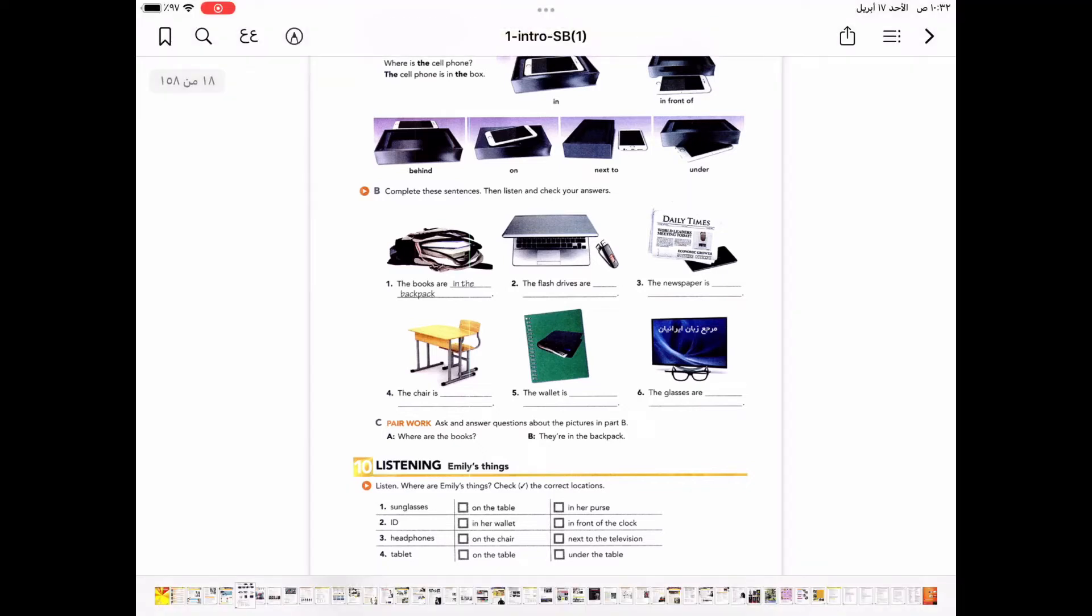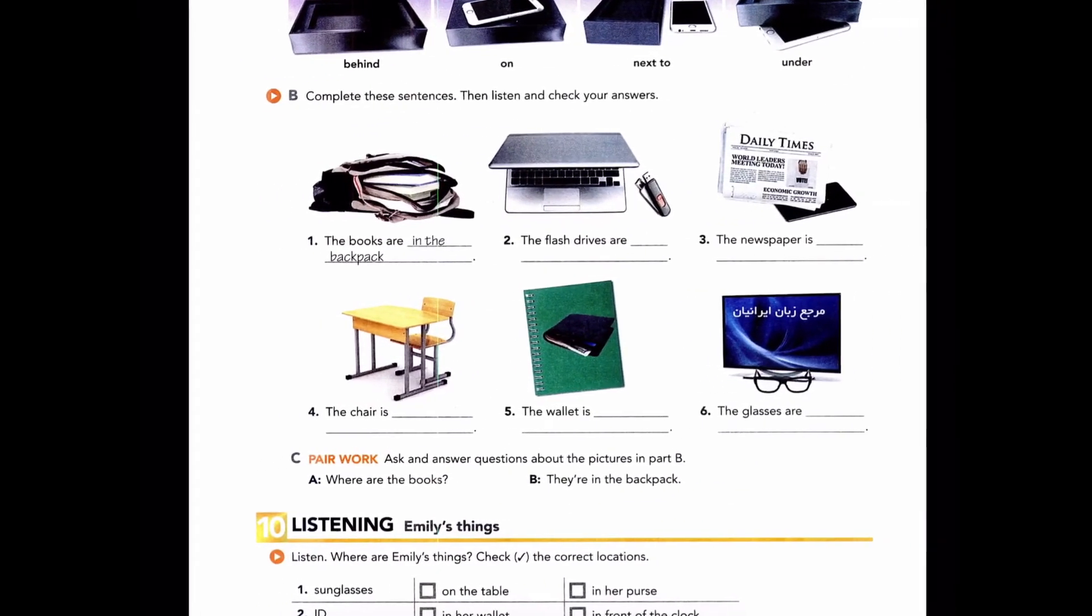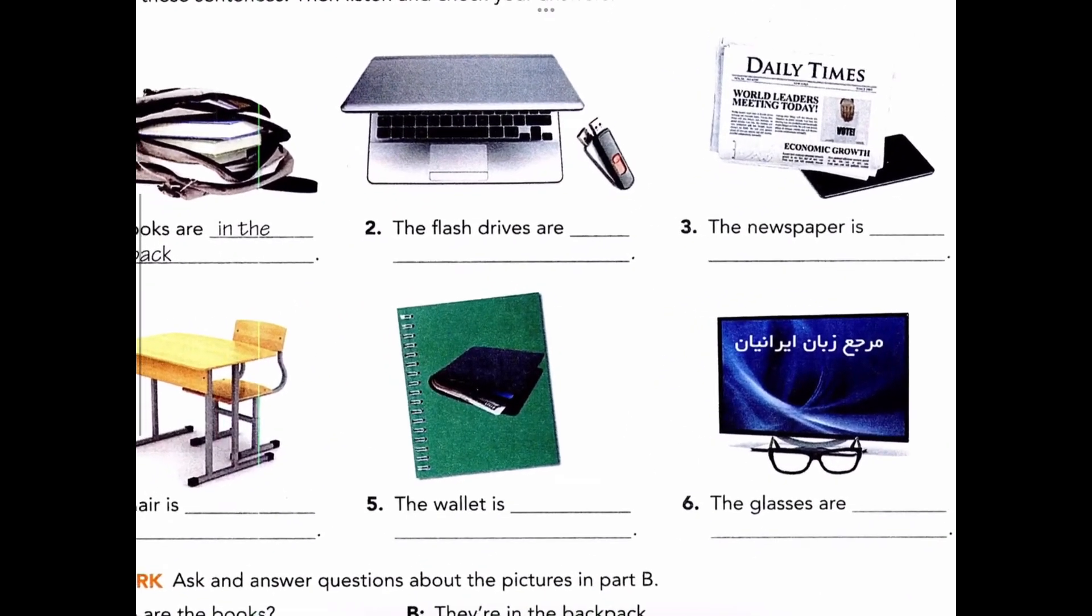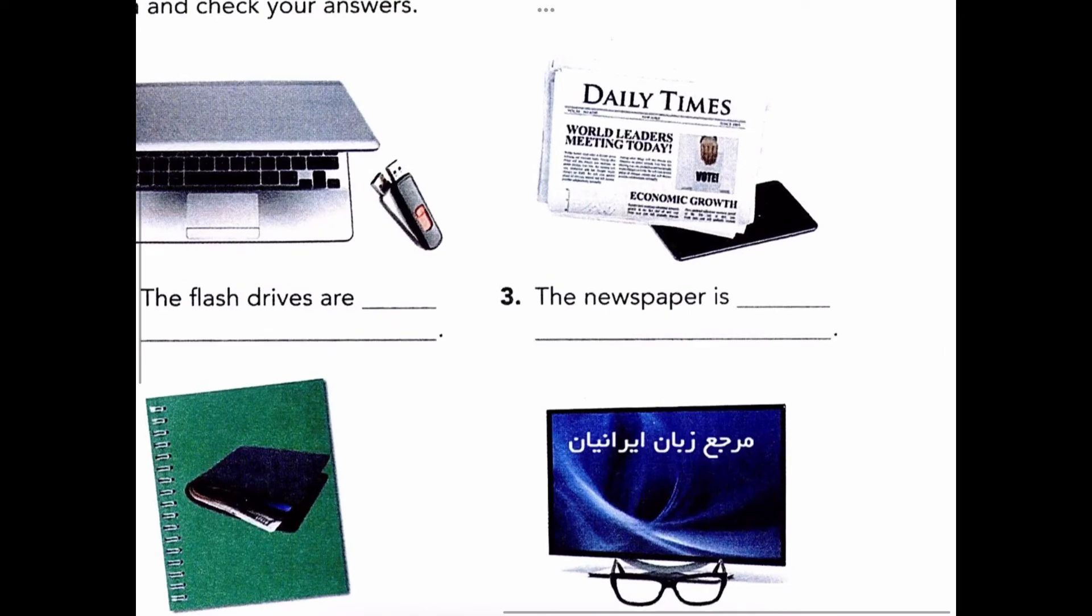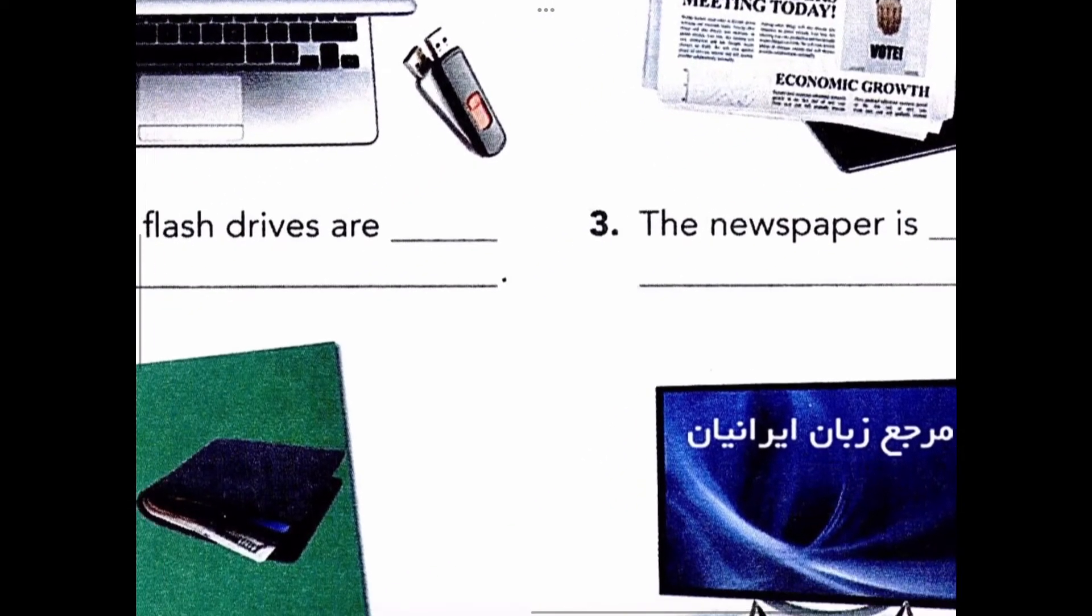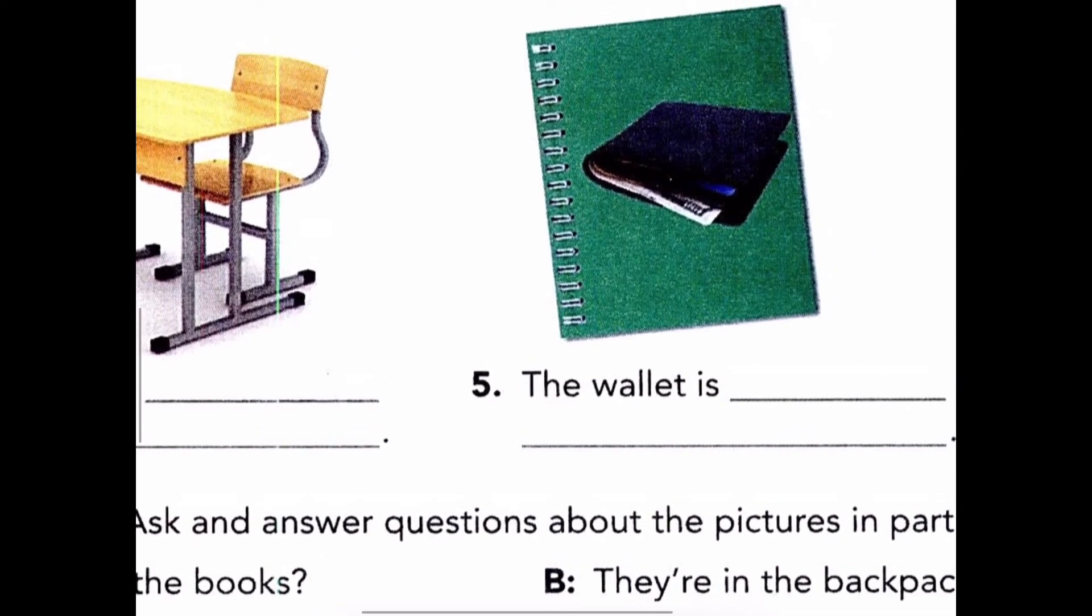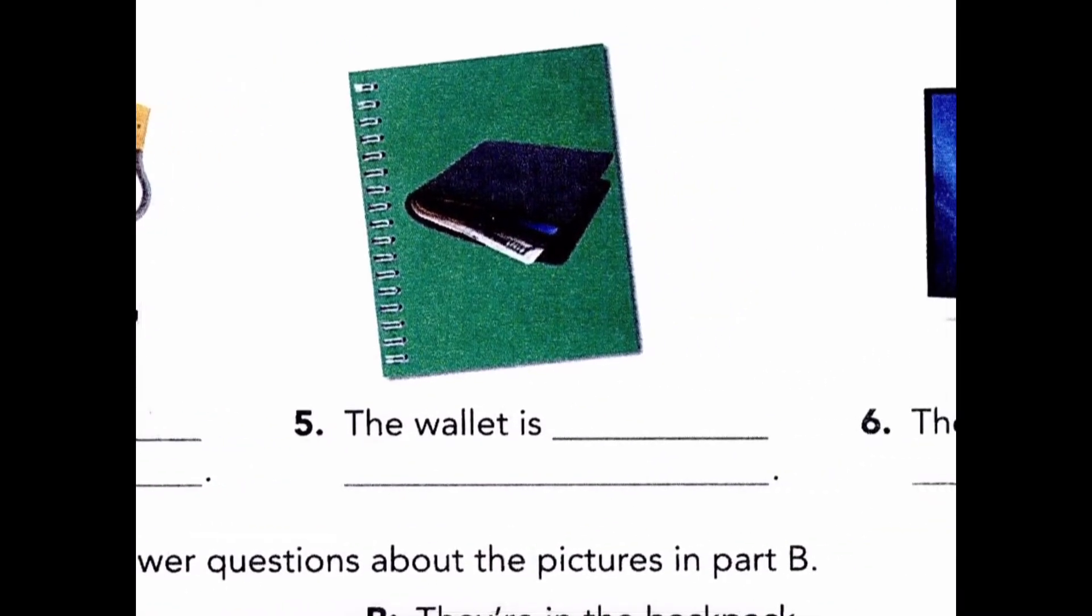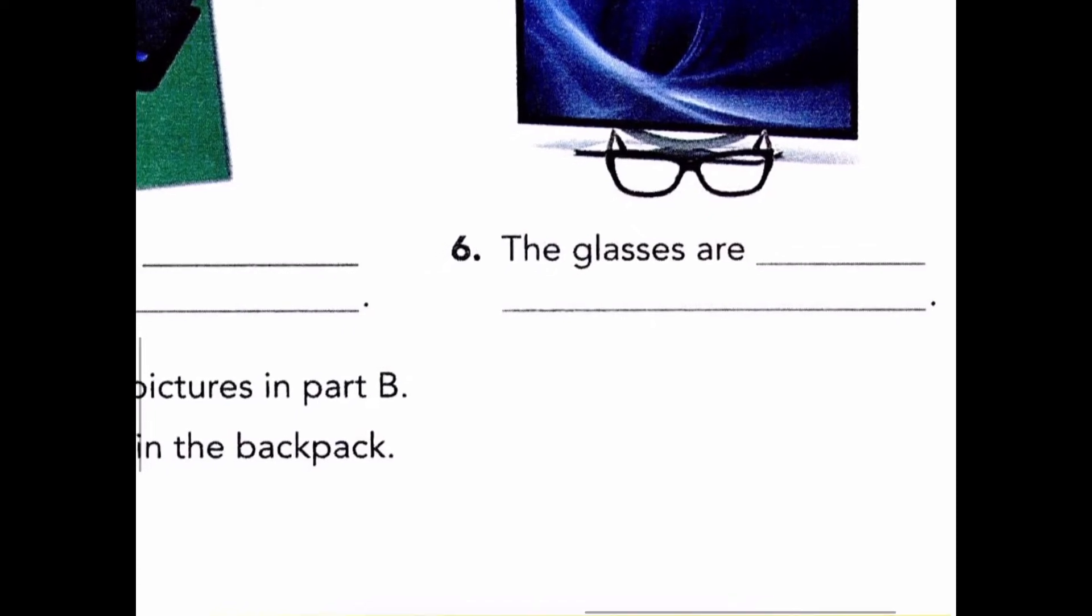Page 12, Exercise 9, Part B: Complete these sentences. Then listen and check your answers. One: The books are in the backpack. Two: The flash drives are next to the laptop. Three: The newspaper is on the tablet. Four: The chair is behind the desk. Five: The wallet is on the notebook. Six: The glasses are in front of the television.